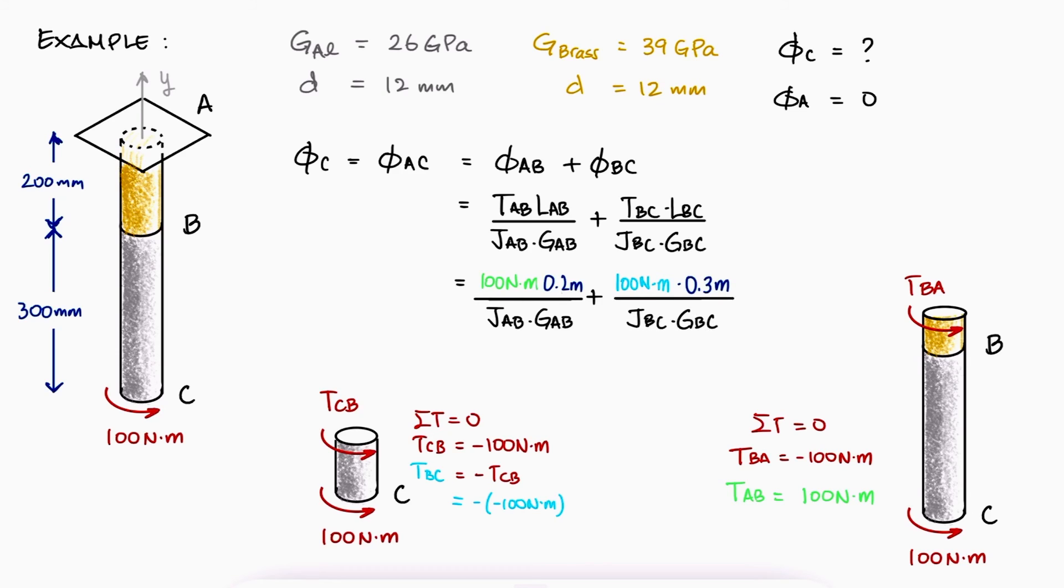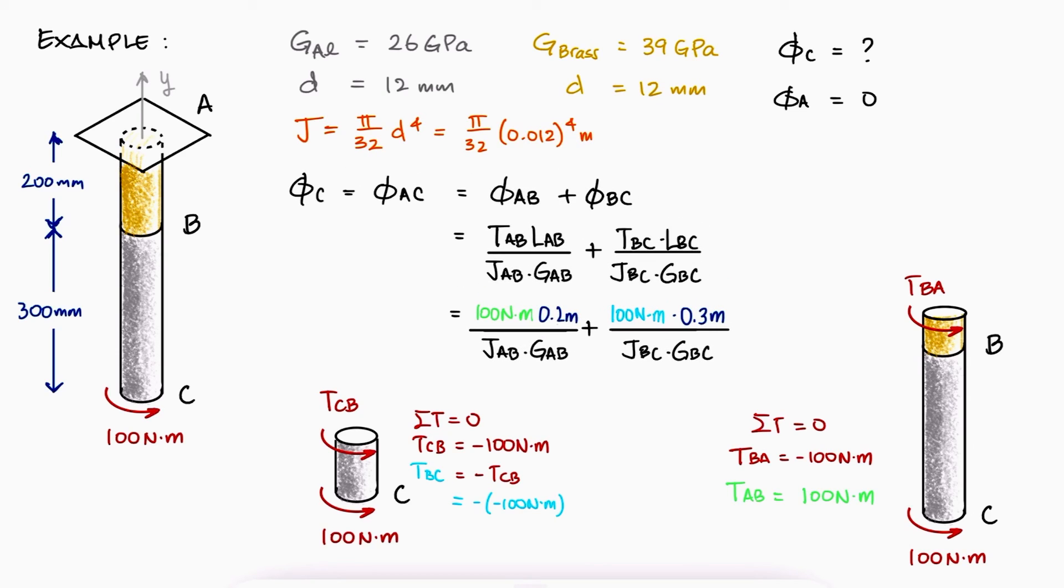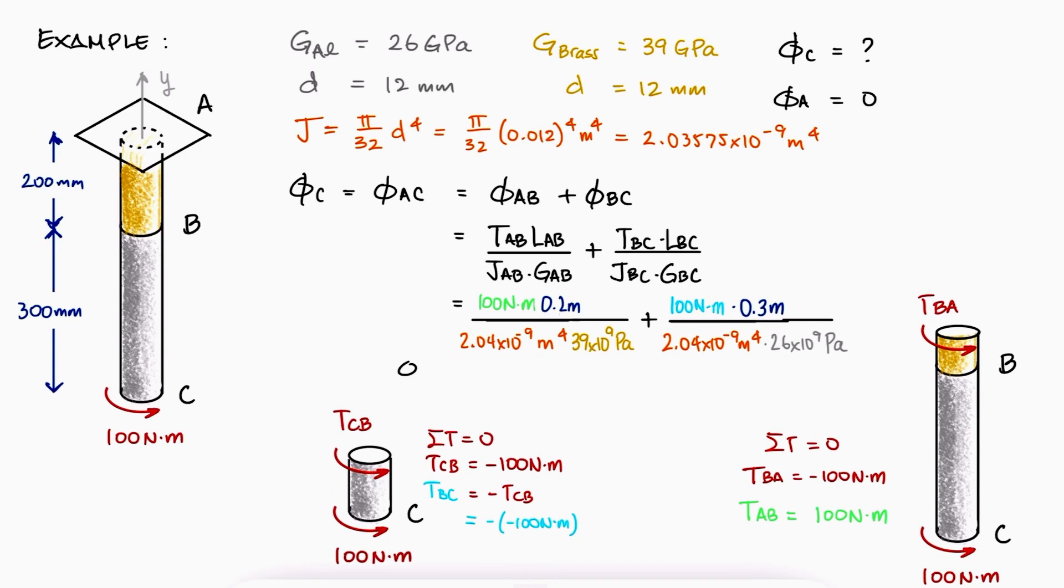Substituting the lengths, calculating and substituting the polar second moment of area J with the diameter information, and substituting the shear moduli, we find that phi C is equal to positive 0.8187 radians, which with a simple conversion, is positive 46.9 degrees.